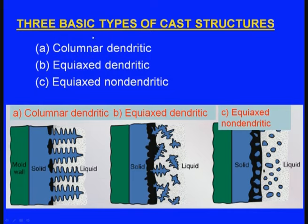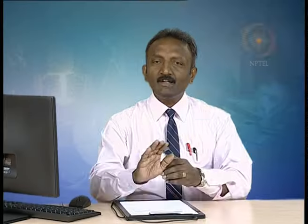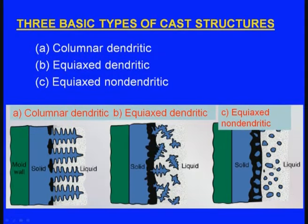There are three basic types of cast structures. First is columnar dendritic: a column structure with side dendrites. Second is equiaxed dendritic: crystals with random orientation but still having dendrites. Third is equiaxed non-dendritic: grains with random orientation and no dendrites — this is the ideal cast structure.